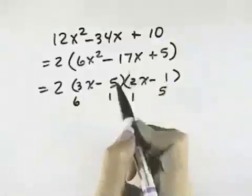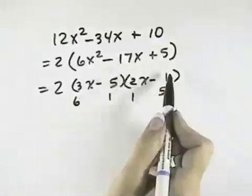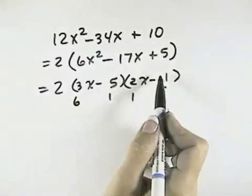So if we try this combination here, we get negative 10 in the middle and negative 3 on the outside. That's negative 13. That doesn't work.